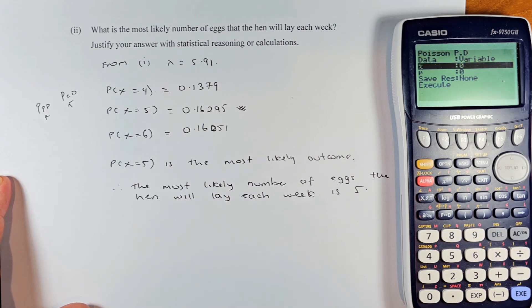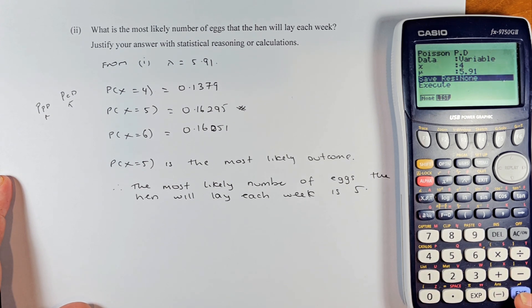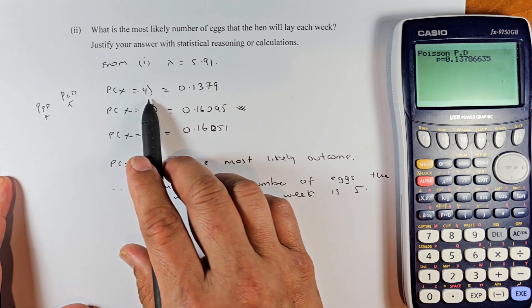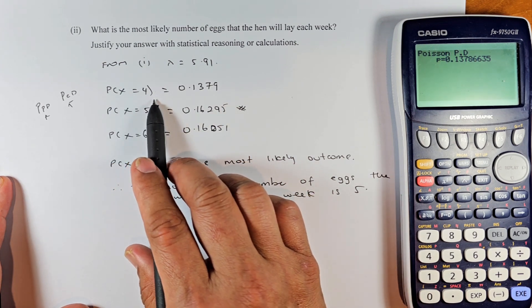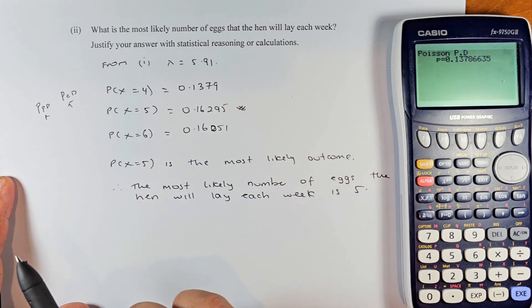Your x is 4 because that's x equals 4. Execute. Your mu is also the same as lambda, that's the mean, 5.91. Press the execute button. The answer is 0.1379. So when x equals 4, the hen will lay 4 eggs. The answer is 0.1379.